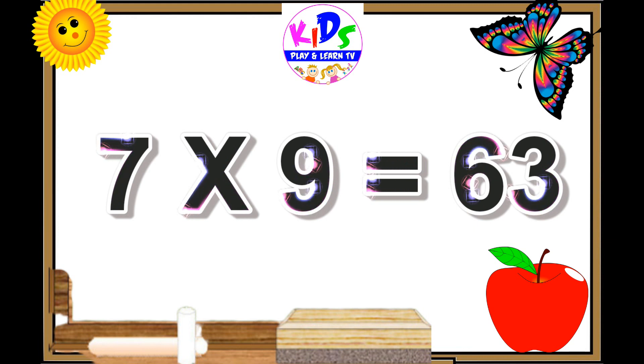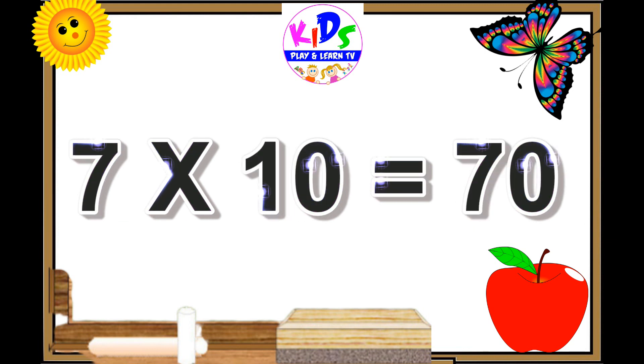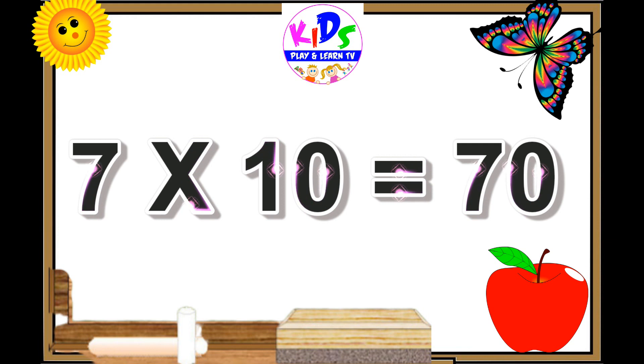Seven eights are fifty-six, seven eights are fifty-six. Seven nines are sixty-three, seven nines are sixty-three. Seven tens are seventy, seven tens are seventy.